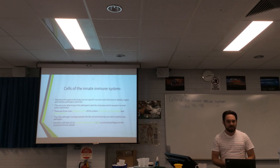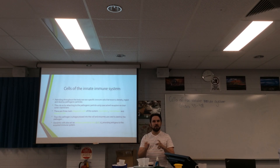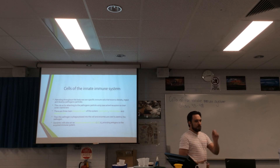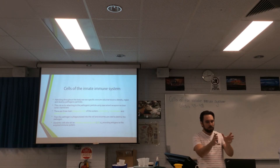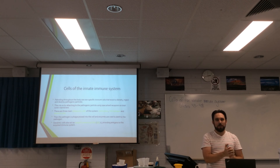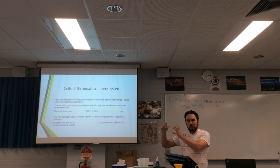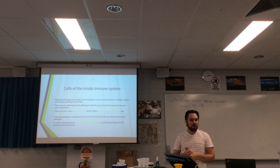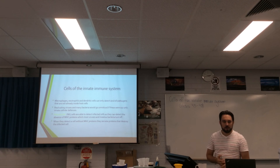Dendritic cells present antigens to the acquired immune system, so there's a relationship — a critical interaction — between the two systems. These phagocytic cells identify, capture, and destroy pathogens, and then based on what they destroy, they produce antigens — the particles that allow our immune system to identify threats. The innate immune system and the acquired immune system are interconnected, and without one, the other fails.